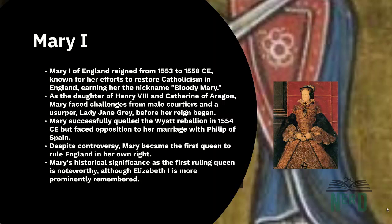However, her marriage to Philip of Catholic Spain was met with opposition and disapproval. Despite facing obstacles and controversy during her reign, Mary became the first queen to rule England in her own right. She passed away in 1558 due to cancer and her half-sister Elizabeth I succeeded her as queen, leading England back to Protestantism. While Elizabeth is often remembered more prominently, Mary's historical significance as the first ruling queen of England remains noteworthy.